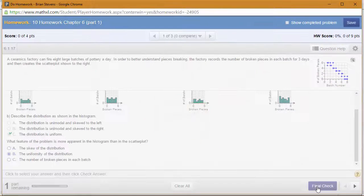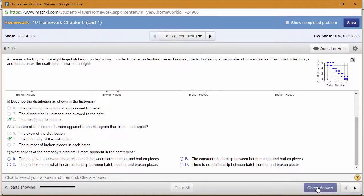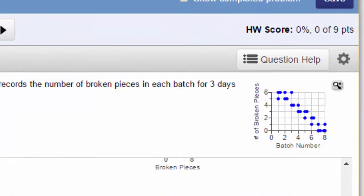What aspect of the company's problem is more apparent in the scatter plot? Well, the scatter plot is going to give the bivariate relationship, and that is definitely the negative correlation.